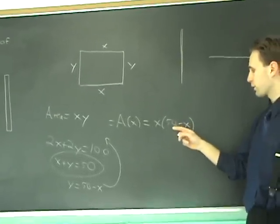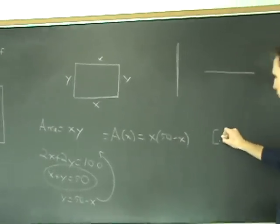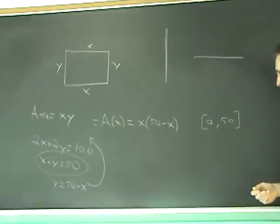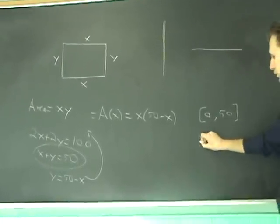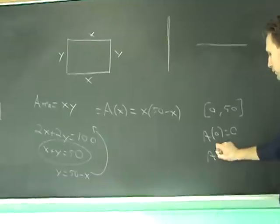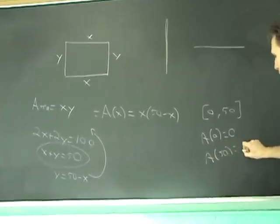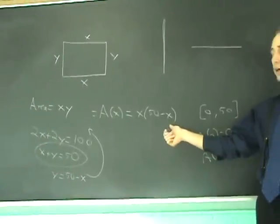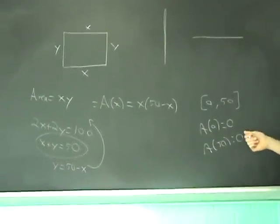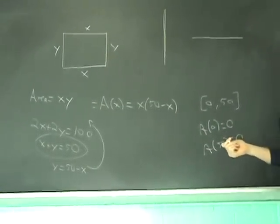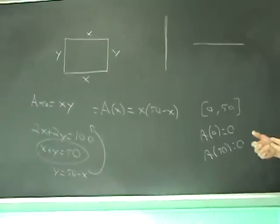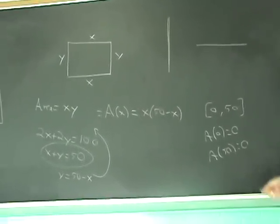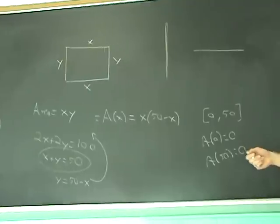But you have this function here, it's zero at the end points, right? You want to maximize this on the interval zero and 50. The only extreme values that make sense. A of zero is zero, which we just said. And also, A of 50 is zero. You can figure that out just by looking at the context of the problem, or by plugging zero and 50 into the area function. But it has to have a maximum value somewhere, because of the extreme value theorem. So, we know that the maximum and minimum must occur at either end points or critical numbers. We did the end points, so now we have to do critical numbers.